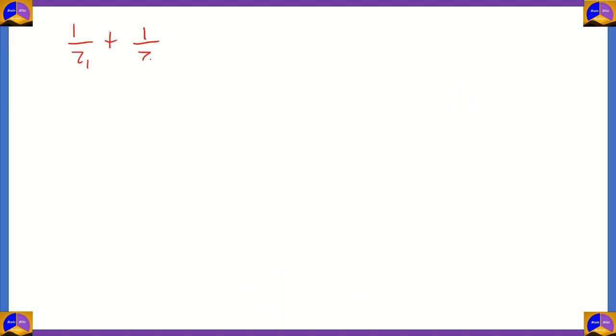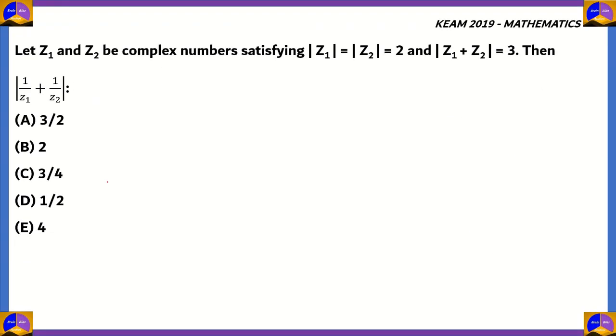Therefore, 1 by z1 plus 1 by z2 will now be equal to 3 divided by 2 times 2. Therefore, the correct answer is 3 divided by 4. Among the following options, it's clear that option C is the correct answer.